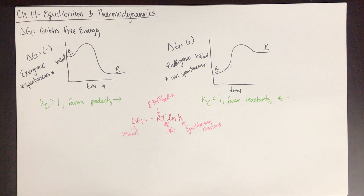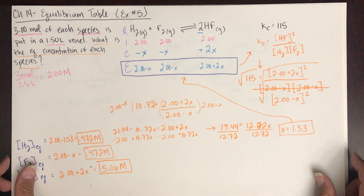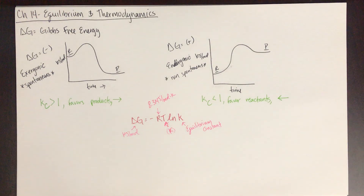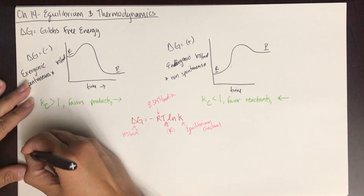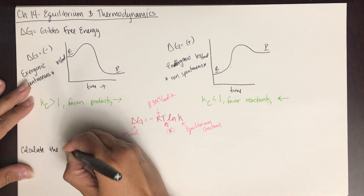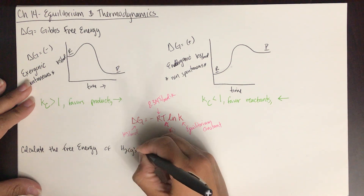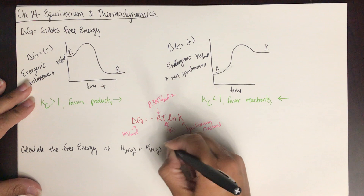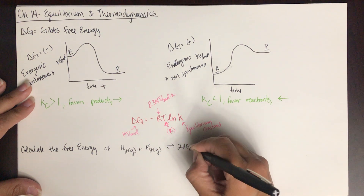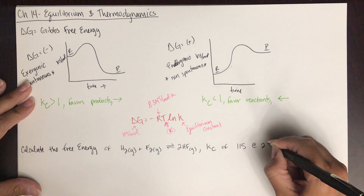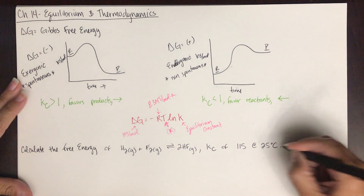Let's look at an example using the previous problem. We want to calculate the delta G for hydrogen gas plus fluorine gas in equilibrium with 2 moles of hydrogen fluoride gas, which has a KC of 115 at 25 degrees Celsius. We're solving for free energy.